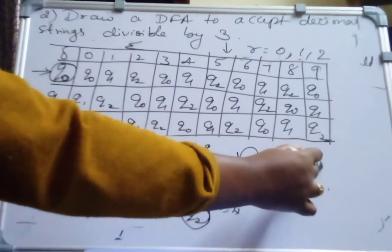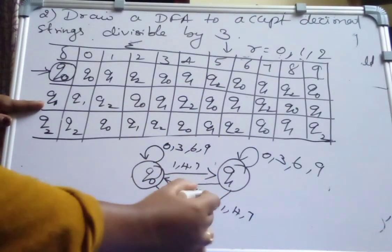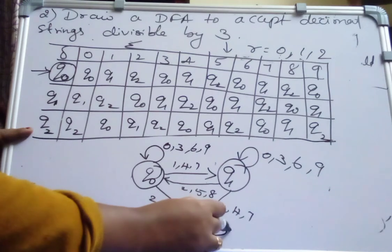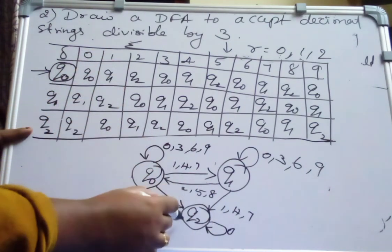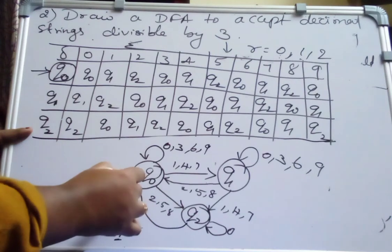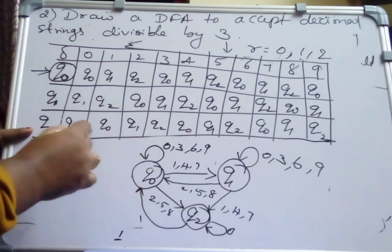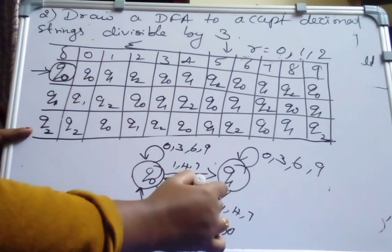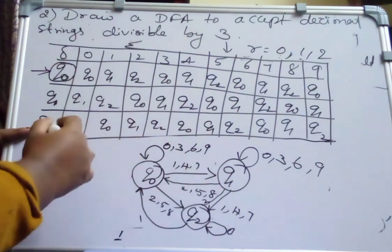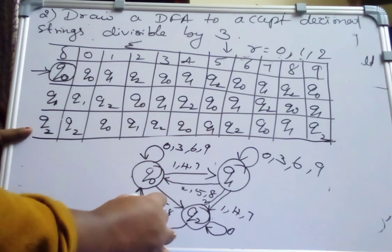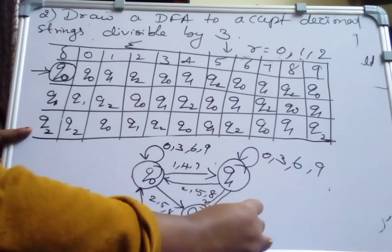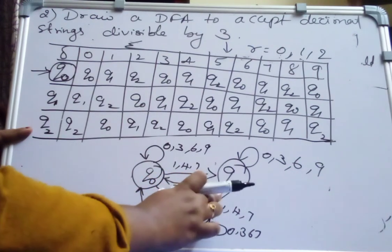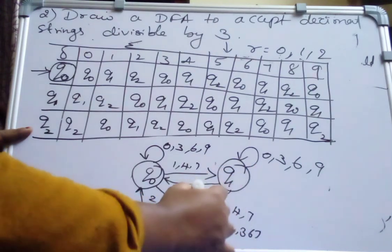So like this if you fill, finally you will end up with like this 1, 4, 7 you will get and here also you will get 2, 5, 8. Similarly Q2, Q2 on 0 to Q2. Q2 on 1 to Q0. Q2 on 2 to Q1. So here you will get 1, 4, 7 and here you are going to get after filling 0, 3, 6, 9 and here also you got 2, 5, 8. And here also you will get 2, 5, 8. Q2 on Q1. So this is a DFA.